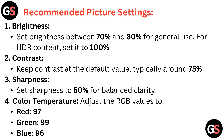For HDR content, set brightness to 100%. Keep contrast at the default value, typically around 75%. Set sharpness to 50% for balanced clarity.